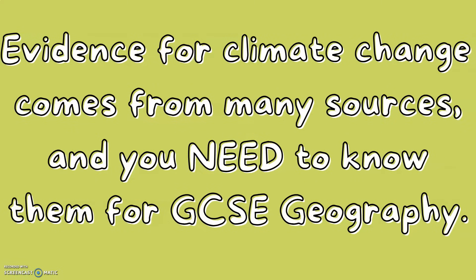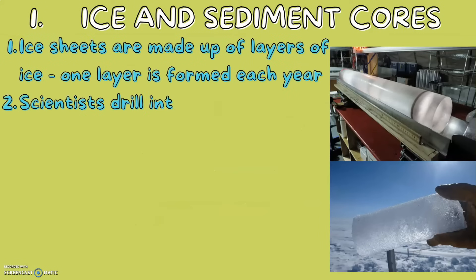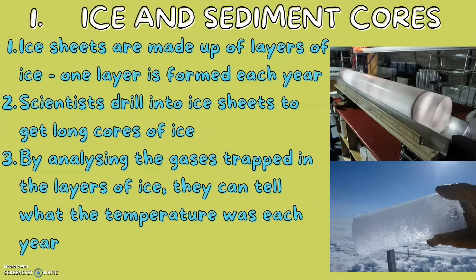Evidence for climate change comes from many sources, and you need to know them for your GCSE geography. First, ice and sediment cores. Ice sheets are made up of layers of ice — one layer is formed every year. Scientists drill into ice sheets to get long cores of ice, and by analysing the gases trapped in the layers, they can tell what the temperature was each and every year.